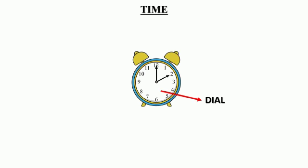How many hands are there on the face of the clock? Yes, two. The shorter hand is called the hour hand. The longer hand is called the minute hand.